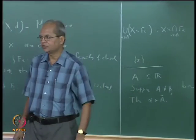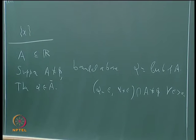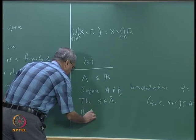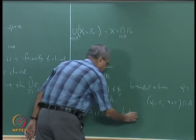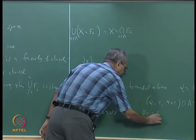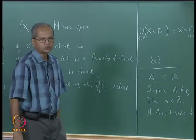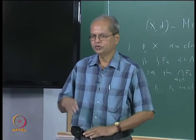In particular, if a set is closed, it contains its least upper bound. Similarly, if A is bounded below and beta is the infimum of A, then beta also belongs to the closure of A. So both the supremum and infimum of A are always in the closure of A. In particular, if A is a closed set, it will contain its supremum as well as its infimum.